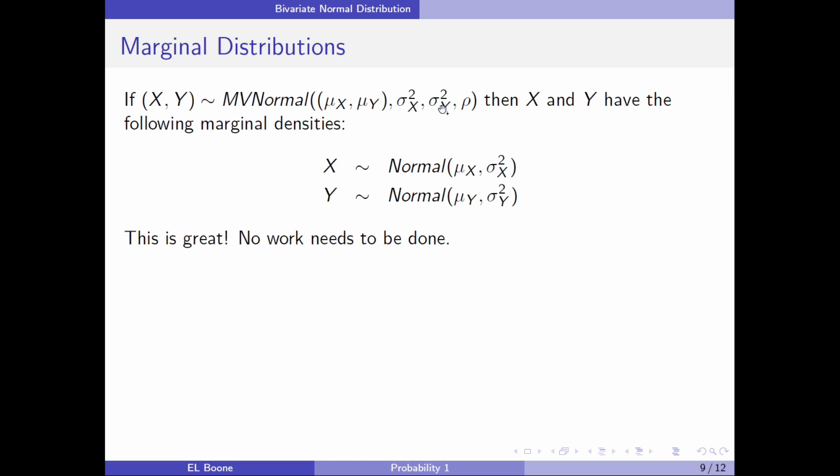Marginal distributions on this thing are super simple. You just omit the variable you don't want. If I had x and y multivariate normal, and these are my means and standard deviations with ρ,